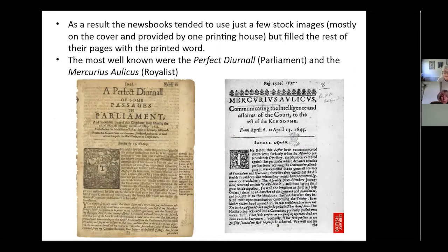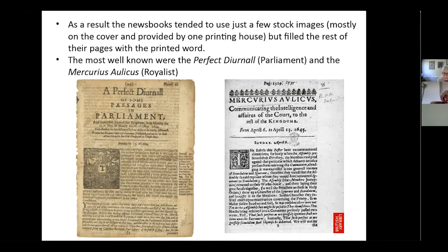These stock images, as seen on Mercurius Civicus, tended to split. You had the newspapers for Parliament and newspapers for the Royalists — the Perfect Diurnal, which was the Parliament one, and Mercurius Aulicus, which is the Royalist one. These were full of what the enemy had done, how nasty they'd been, how good we were — so they were perfect propaganda tools. The one on the left we've got in the archives collection, and the one on the right is actually from the British Library. We don't appear to have any of those in the archives, sadly.